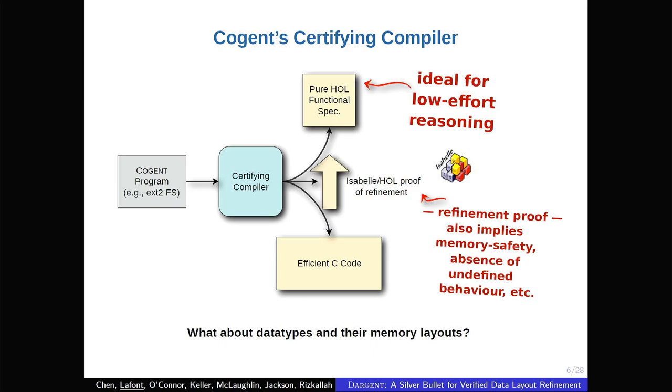The main point of Cogent is that it has a certifying compiler. So, it produces out of a Cogent program a C program, but also a pure HL functional specification, which is ideal for low effort reasoning. And it also produces usable proof of profilement between the C code and functional specification. And this profilement proof implies memory safety and absence of undefined behavior. Now, this is nice, but this only talks about the code, but with this you cannot really specify how the data types are laid out in memory.